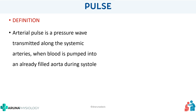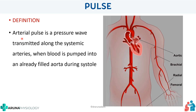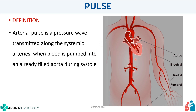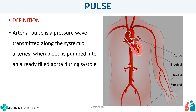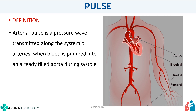A must-know question here is the definition of pulse. The arterial pulse is a pressure wave that is transmitted along the systemic arteries when blood is pumped into an already filled aorta during systole. We all know what pulse is, but when asked to define it, we often find it difficult.